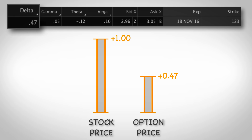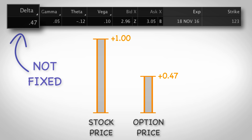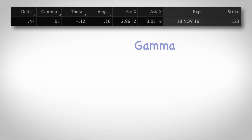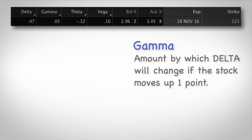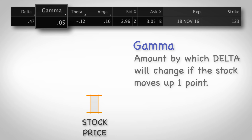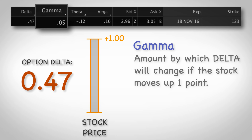Delta is the amount by which an option will change in value if the stock goes up one point. But delta is not a fixed number — as the stock moves around, delta will actually change, and it will change by the value of gamma. Gamma is the amount by which delta will change if the stock moves up one point. For this option, the gamma is 5 cents, meaning if the stock goes up one point, the delta — currently at 47 cents — will increase by 5 cents, going from 47 cents up to 52 cents.